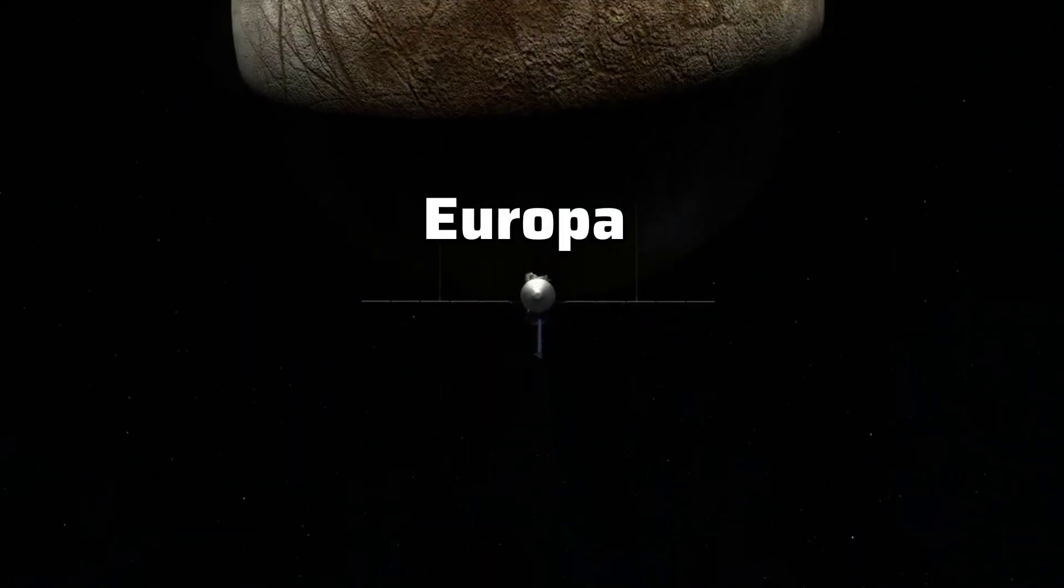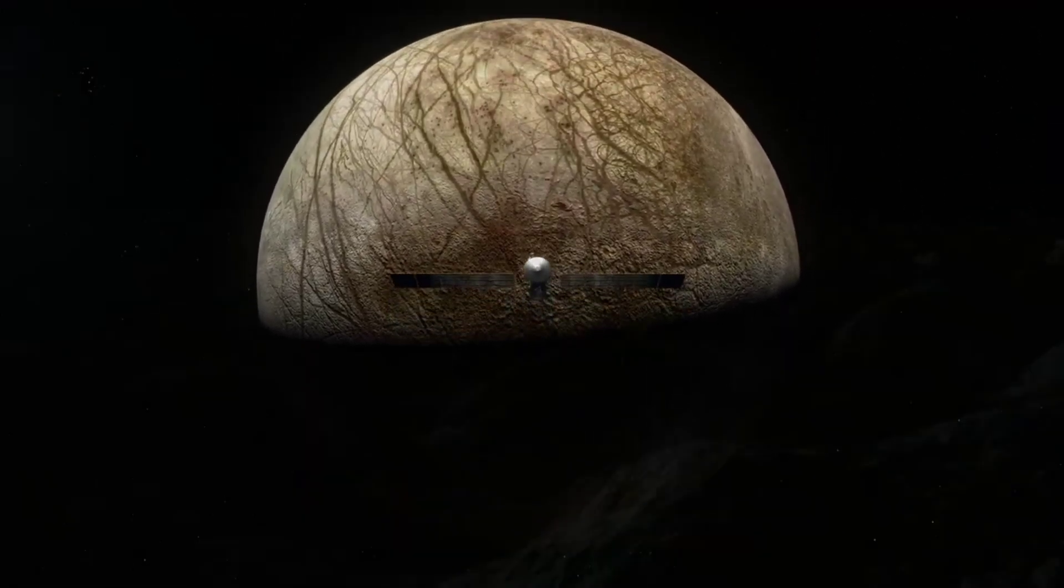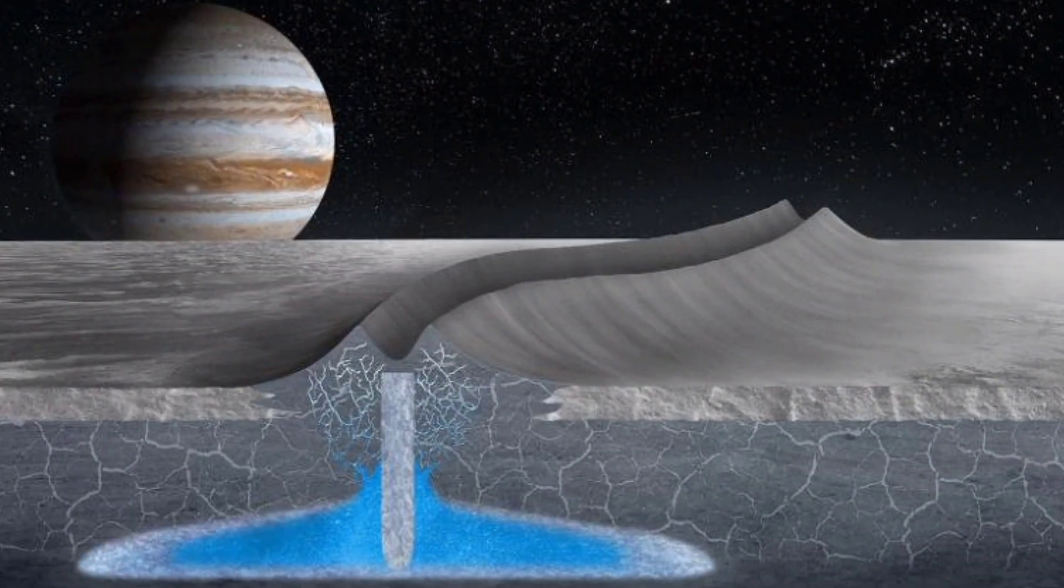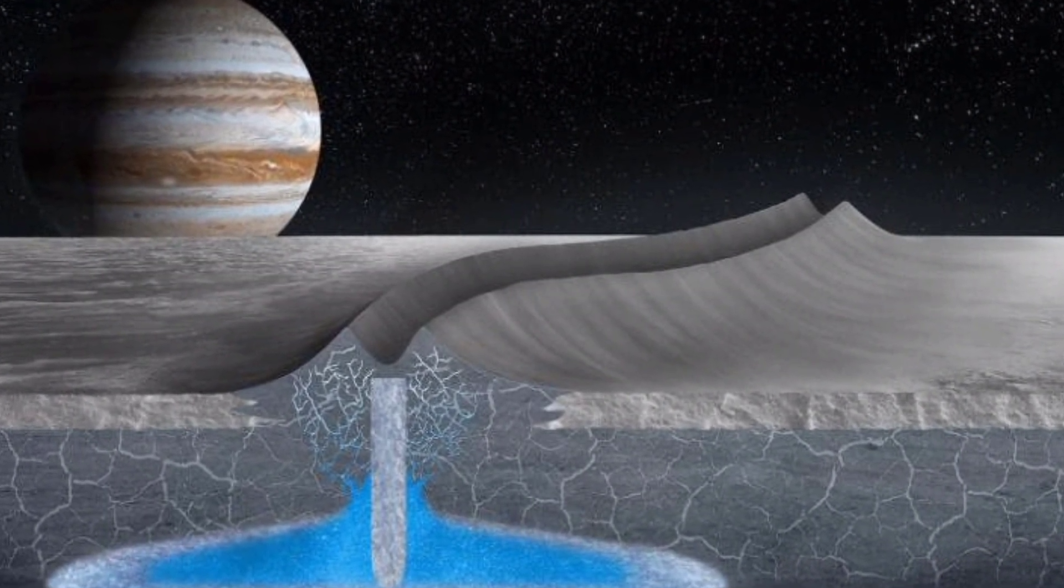Europa, one of Jupiter's moons, has a super tough icy shell. Under this shell there is a really huge ocean, which is twice as big as Earth's oceans.